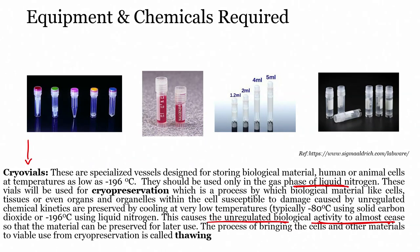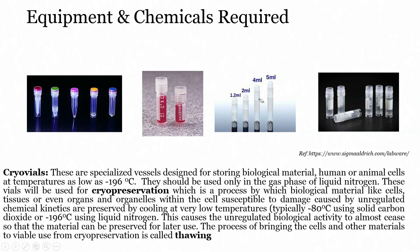The process of bringing cells and other materials back to viable use from cryopreservation is called thawing — thawing is nothing but heating. These cryovials allow you to load the cells and preserve them for a longer time. Images are taken from Sigma Aldrich, which is one of the companies that manufactures these. Cryovials are available in different volumes — 1.2 ml, 2 ml, 4 ml, and 5 ml. These are another set of tools or preservation vessels that are there in the biology environment.